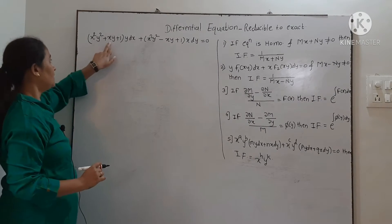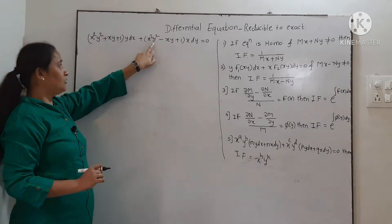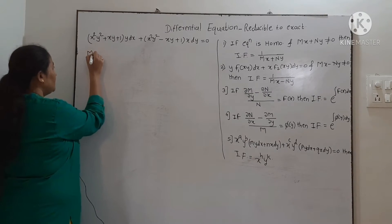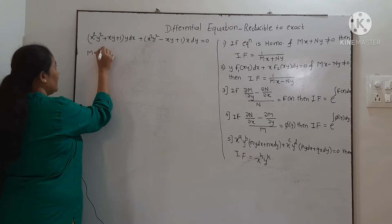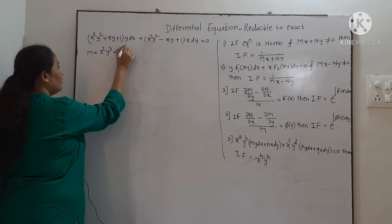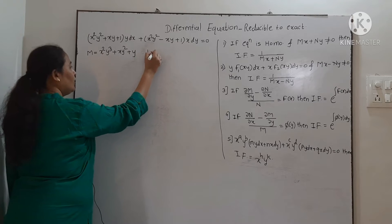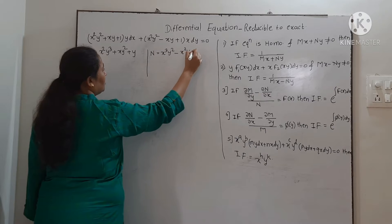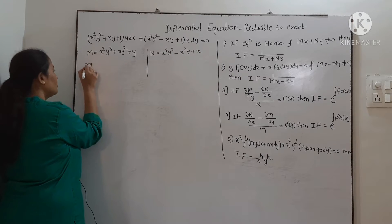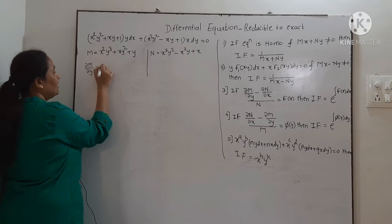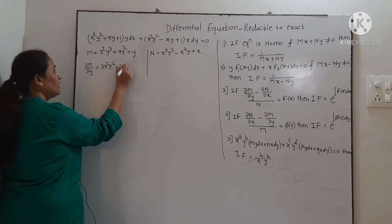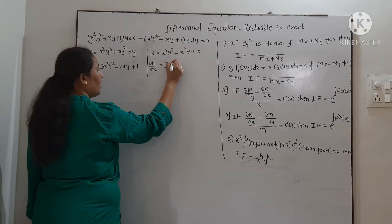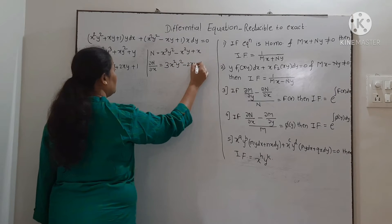Consider the example: (x²y² + xy + 1)y dx + (x²y² − xy + 1)x dy = 0. First, comparing with M dx + N dy, we get M = x²y³ + xy² + y, and N = x³y² − x²y + x. Finding ∂M/∂y gives 3x²y² + 2xy + 1.